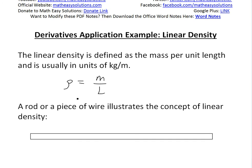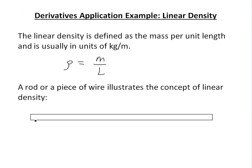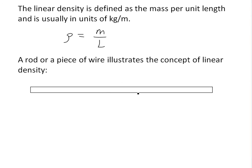As you go across, let's say for example a rod or a piece of wire, this illustrates the concept of linear density pretty well. So if you have a rod like this, depending on if it's uniform or not, the linear density states how dense it is varying across this rod.